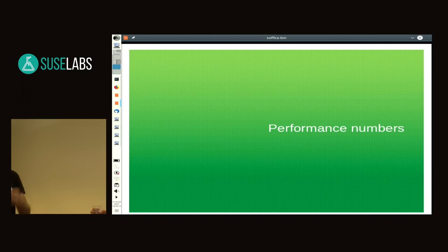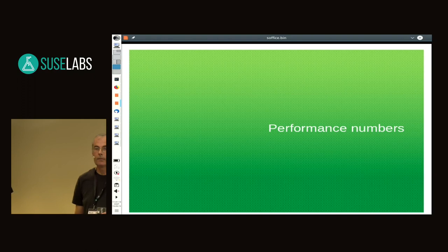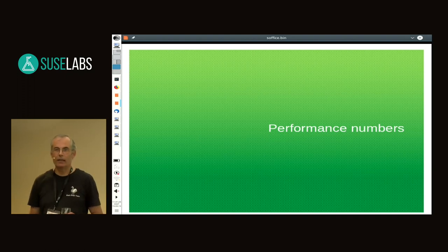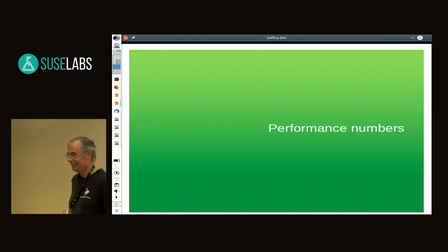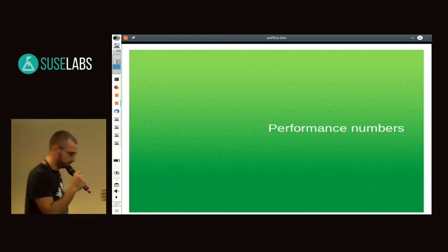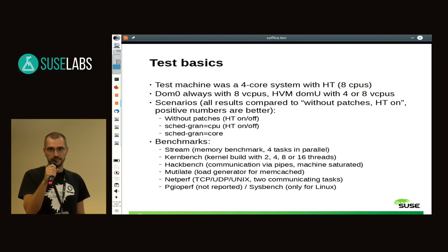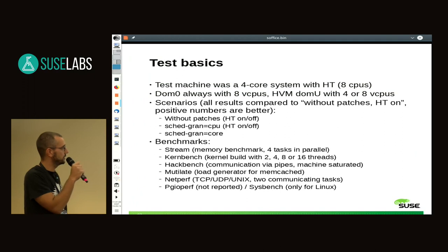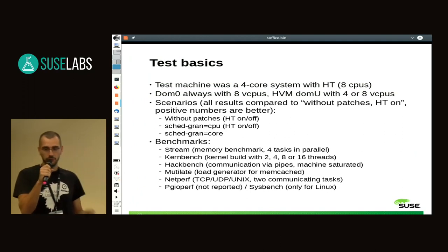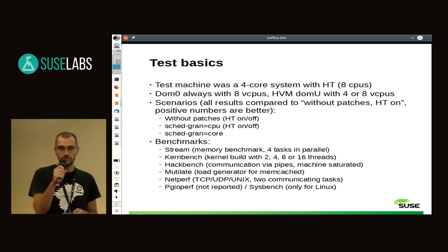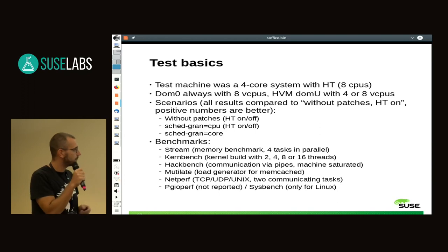A question was asked: what happens if one guest does a VM exit — specifically, can one guest run in VM mode while the other is running in the hypervisor or DOM0? The answer is: not yet addressed — that will be covered in the final remarks. Dario, one of the Xen scheduler maintainers, then takes over. His involvement has been reviewing Juergen's patches so they can be applied to Xen, and running benchmarks.